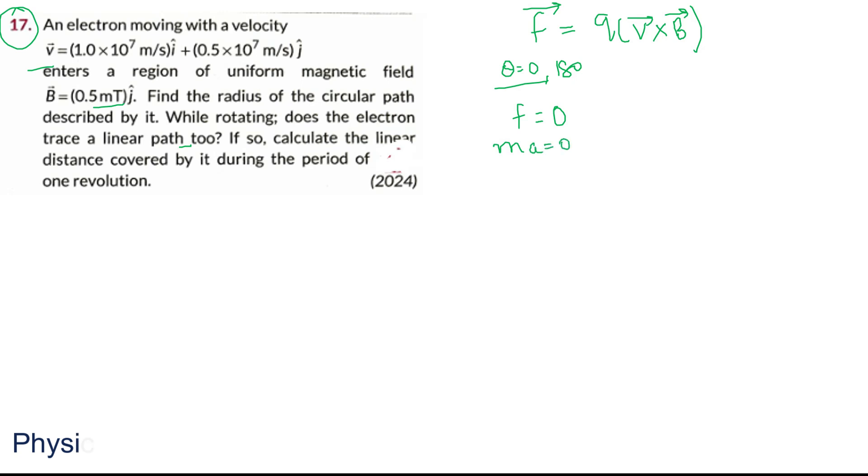Force 0 means M A is 0, so acceleration is 0. Acceleration 0 means change in velocity is 0. So velocity is constant. Velocity constant means straight line path.